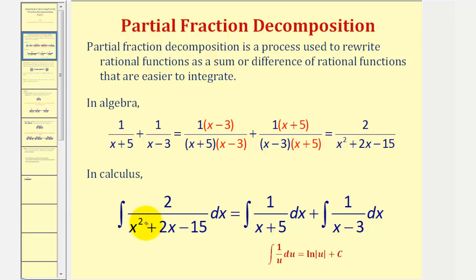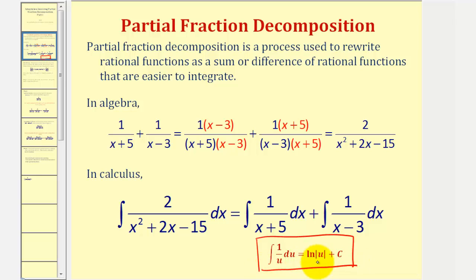In calculus, if we have a rational function, it's going to be easier to integrate if we write it as a sum of two simpler rational functions. In most cases, we use the integration formula where the integral of one over u with respect to u is equal to the natural log of the absolute value of u plus c. Now we'll review the process for performing partial fraction decomposition and then take a look at two examples.